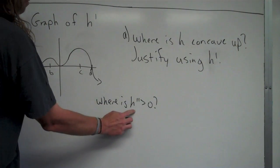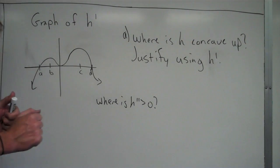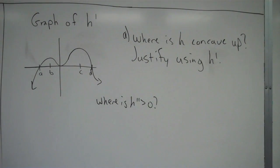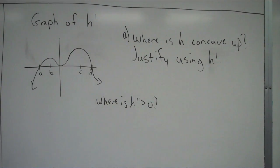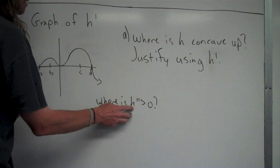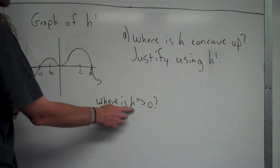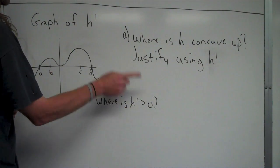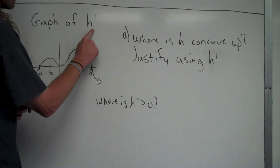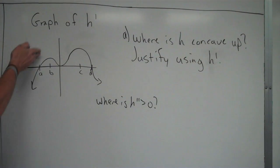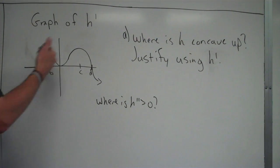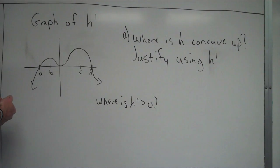H double prime is the derivative of H prime. What we want to think here is that derivative and slope are essentially synonyms for one another. So saying that H double prime is the derivative of H prime is the same thing as saying H double prime is the slope of H prime.